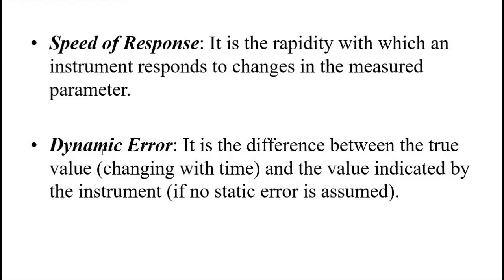Next is dynamic error. We've discussed static error — the difference between the measured value and the true value — where the true value is fixed and constant. But in dynamic error, the true value keeps changing with time. So dynamic error is the difference between the changing true value and the value indicated by the instrument.